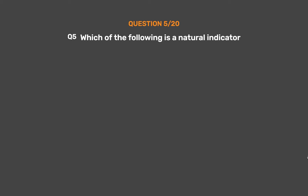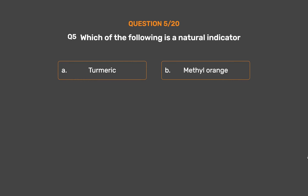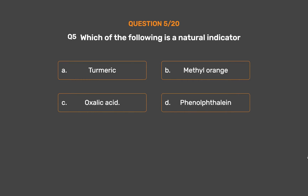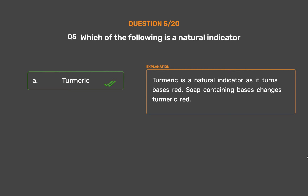Question number 5. Which of the following is a natural indicator? Option A: Turmeric. Option B: Methyl orange. Option C: Oxalic acid. Option D: Phenolphthalein. The correct answer is Option A: Turmeric. Turmeric is a natural indicator as it turns bases red. Soap containing bases changes turmeric red.